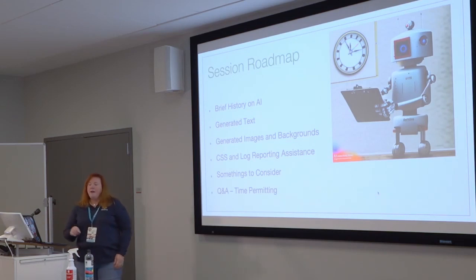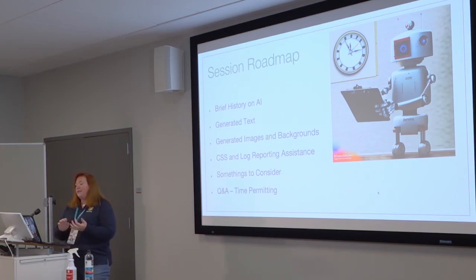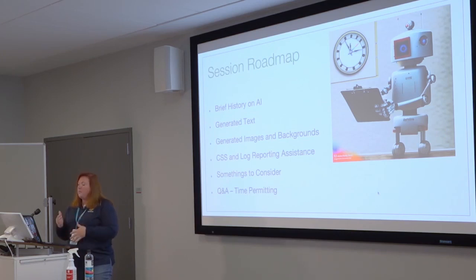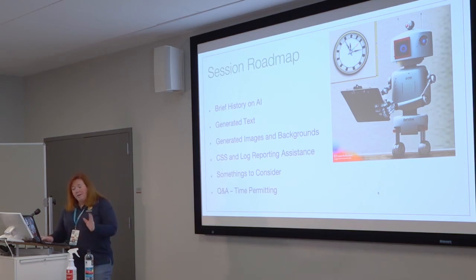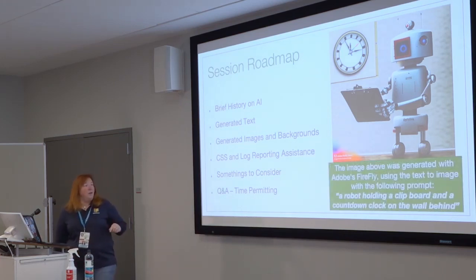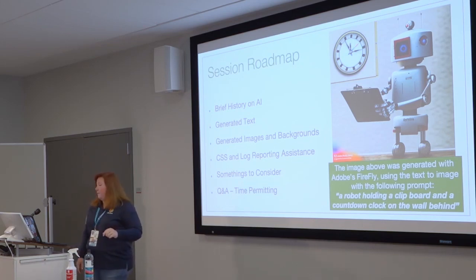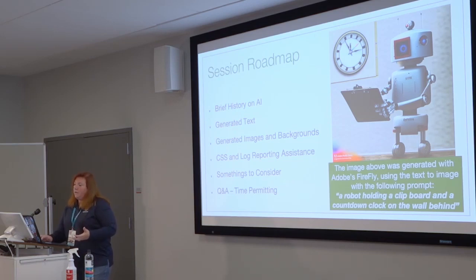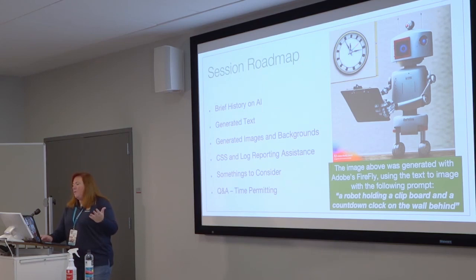What are we going to do today? I always like to tell you what we'll cover. First, a brief history on AI. Then we're going to talk about generating text, images and backgrounds, CSS, log reporting, and some code topics in more depth. And then some things you should consider — as we know, you're not just going to go into ChatGPT, get something, and go 'I'm done.' That is not the way this works. My little robot guy here — the prompt I used was 'holding a clipboard and countdown clock behind him.'